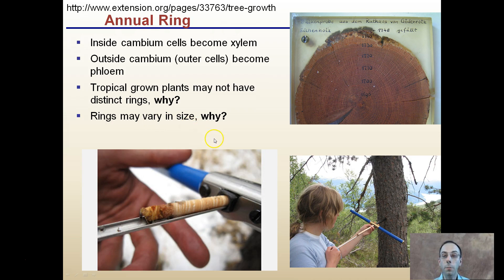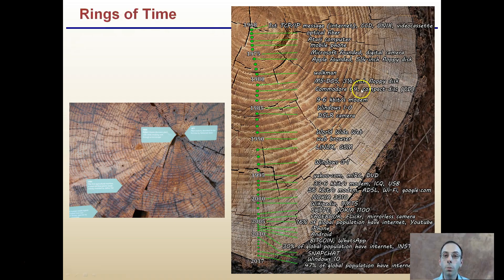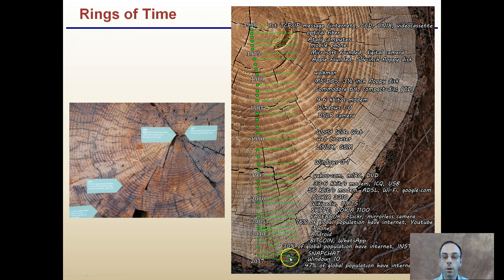Rings may vary in size because of environmental factors and what that tree might be experiencing. Once we know that each ring develops after a year and we know the year the tree was cut down — in this case 2017 — we can trace back to determine how old that tree is and when it may have been first planted. Here we have some historical points of interest throughout the different years this particular tree was growing, with different tags marking different rings.